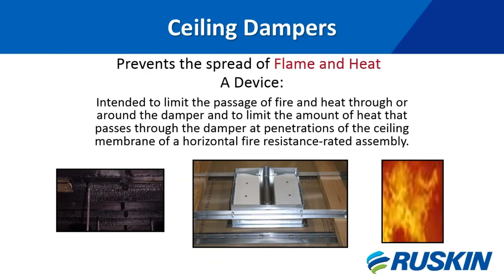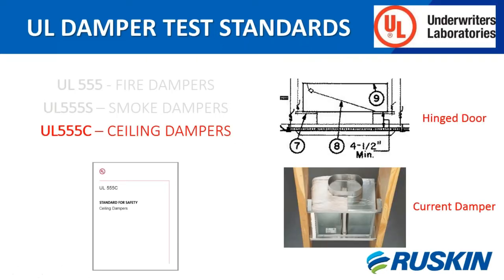Ceiling fire dampers (CFDs) or ceiling radiation dampers (CRDs) are a device intended to limit the passage of flame and heat through or around the damper, and to limit the amount of heat that passes through the damper at penetrations of the ceiling membrane or horizontal fire resistance rated assembly.